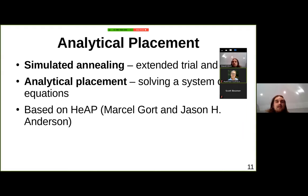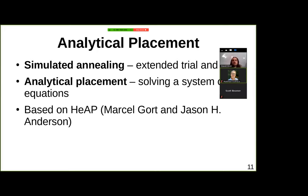The two most common kinds of FPGA placement algorithms are simulated annealing — extended trial and error making lots of swaps, slowly accepting fewer as time goes on, converging from a totally random placement — and analytical placers, which boil everything down to a system of linear equations solved again and again with slightly different coefficients. Simulated annealing gives very good quality if you let it run long enough, but can be very slow on big designs or big FPGAs.